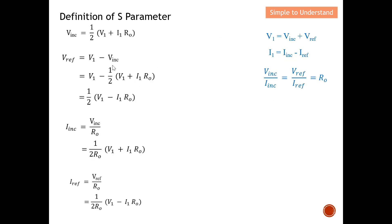Next, I find the reflected voltage. Starting from the equation V1 = V_incident + V_reflected, I bring the incident wave to the left, giving V_reflected = V1 minus V_incident. Substituting the expression for V_incident found earlier, this becomes V1 minus half of V1 plus the remaining terms, giving the reflected voltage successfully expressed in terms of the terminate voltage V1 and terminate current I1.